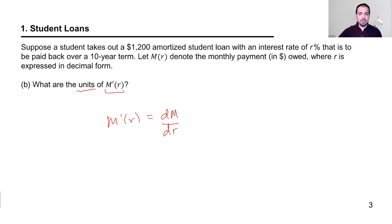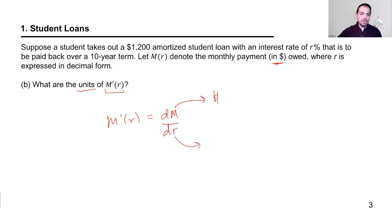The units of M in this problem are dollars — that's the numerator. When you calculate the derivative using the limit definition, you take a difference of the y-values, so we're effectively taking the difference of dollar amounts. The denominator units we'll call 'percent,' which is a somewhat unusual unit, but you'll see why in a minute.